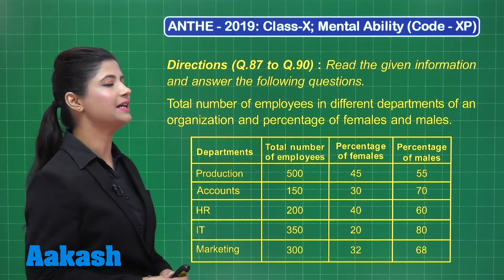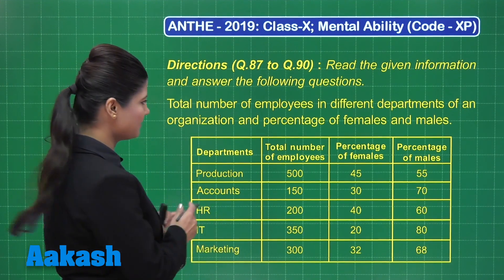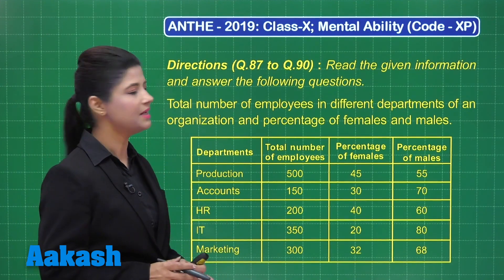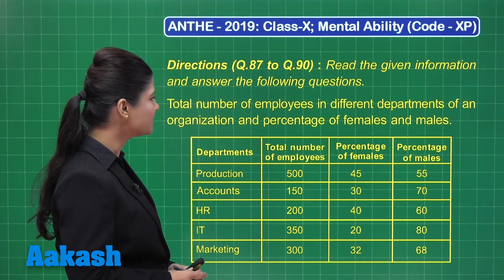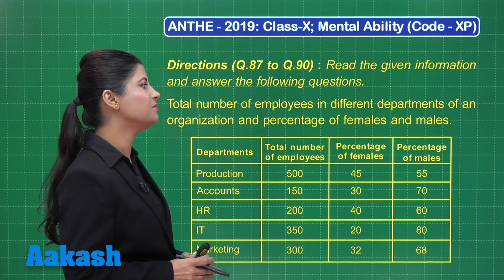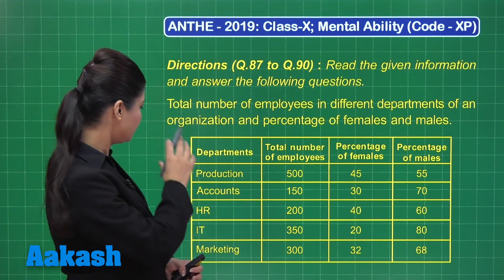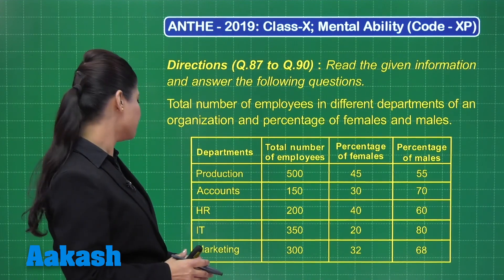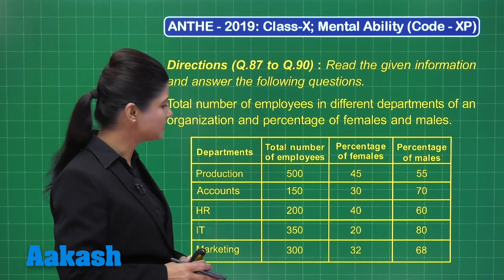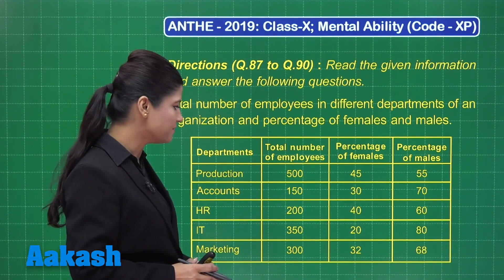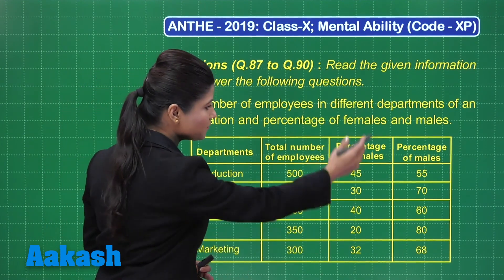Let's proceed to questions 87 to 90. These are linked questions and based on the given data you have to obtain the required information. It has been provided that the total number of employees in different departments of an organization along with the percentage of females and males is given in the table. We are talking about five departments: Production, Accounts, HR, IT, and Marketing, with 500, 150, 200, 350, and 300 employees respectively.